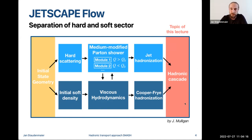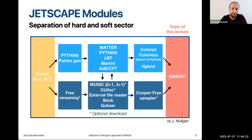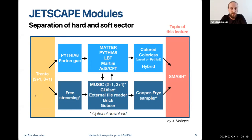The last part of the JETSCAPE flow — the hadronic cascade — is the topic of this lecture. In the JETSCAPE module diagram, the relevant components include TRENTO for initial conditions, MUSIC for hydro, ISS for Cooper-Frye sampling, and SMASH for the late hadronic stages.